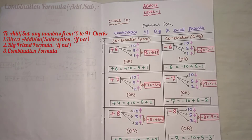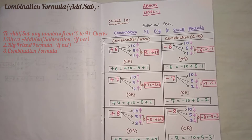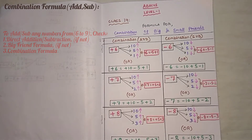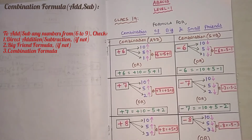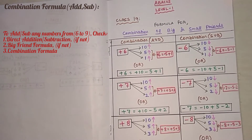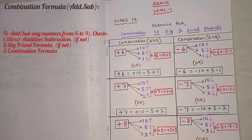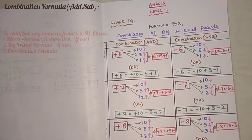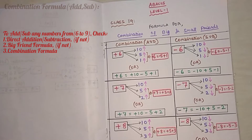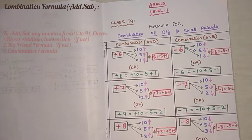Next, coming to numbers 6 to 9 — that is 6, 7, 8, 9. When we don't have enough beads in a row, first check the big friend concept, which we have seen already in previous sessions. If we are not able to apply big friend, then we can take the help of combination formulas.